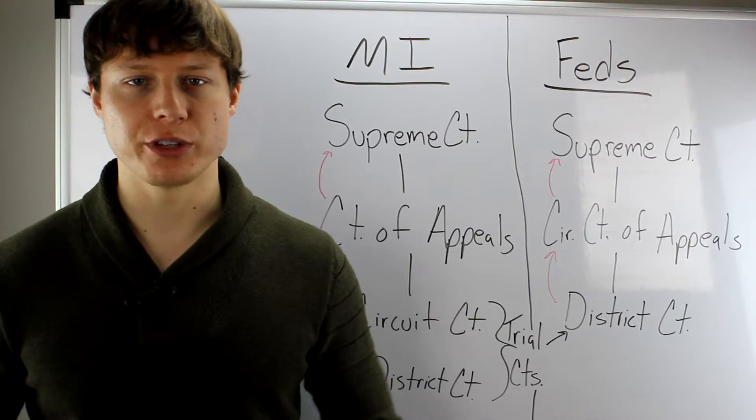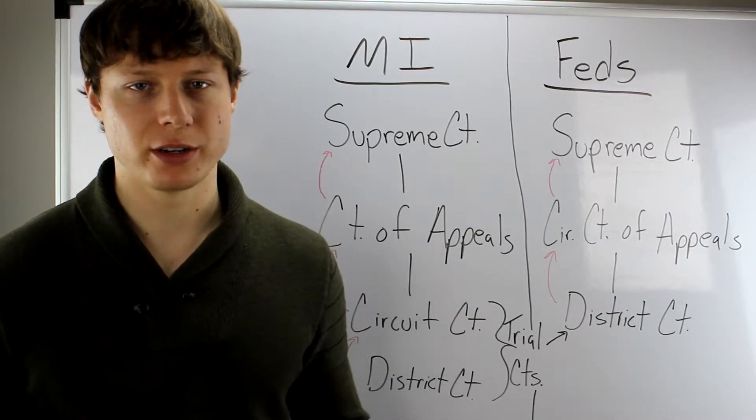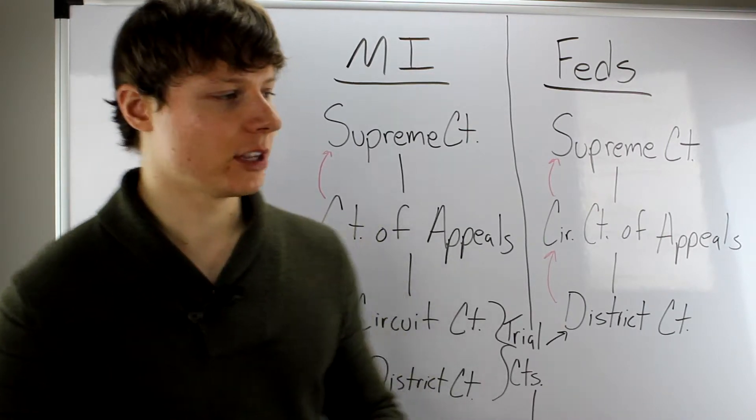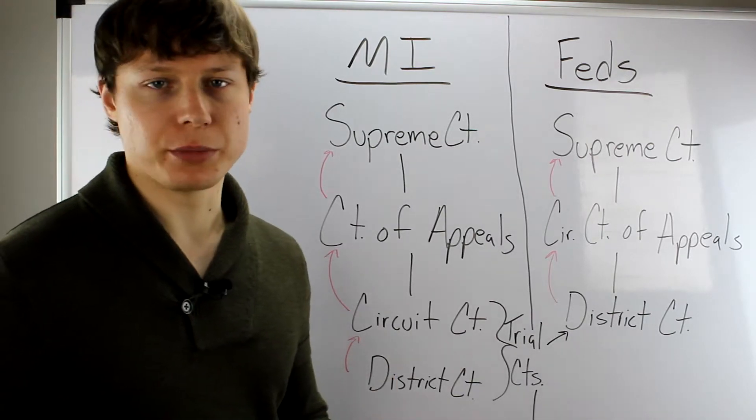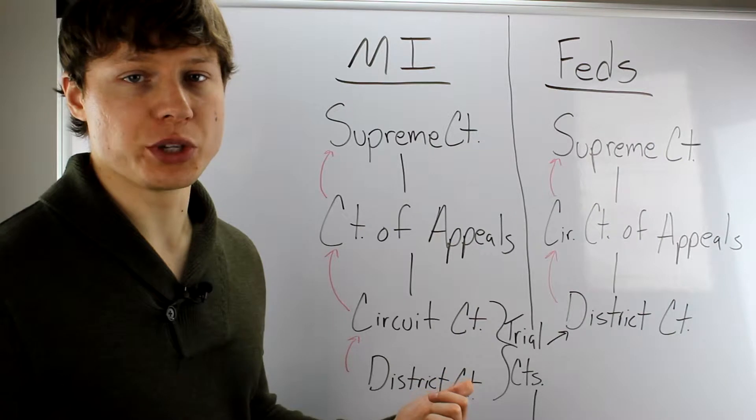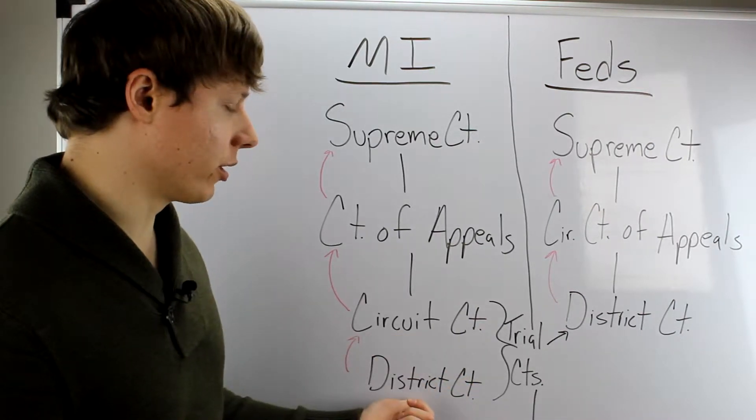So now we're going to learn how these court cases proceed or progress from one tier to another. I'm going to use Michigan again as a guideline. When you're starting out in Michigan courts, say you're suing somebody or you're being sued, you're going to start off depending on what you're suing about and how much money is at stake in either the circuit court or the district court.